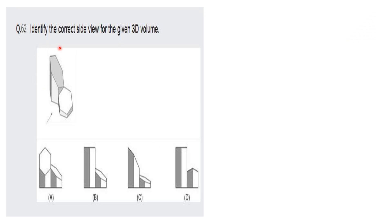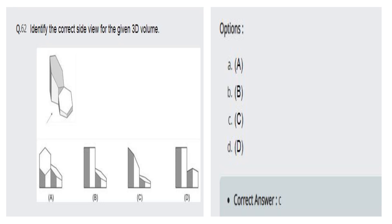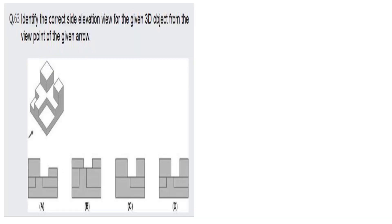The next question is from orthographic projection — identify the correct side view for the given 3D volume. Looking along the arrow direction, we see alternating gray, white, and green colors with slopes on both sides. The slopes are not visible in options A, B, and D, but in option C the slopes are clearly present along with the alternating colors gray, white, gray, white. So option C is the right answer.